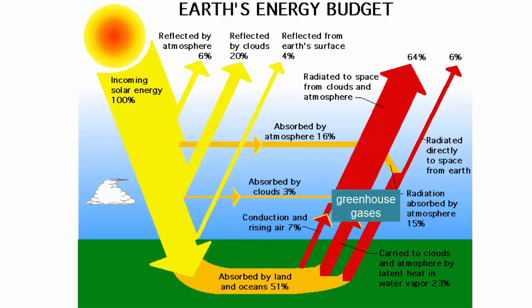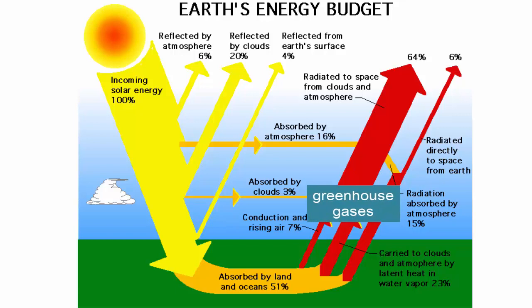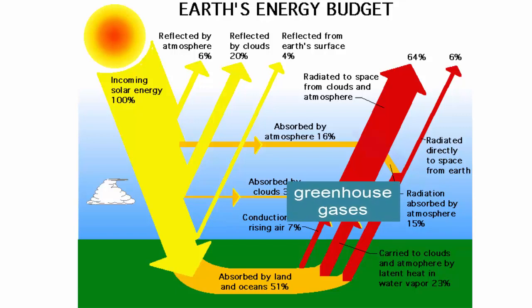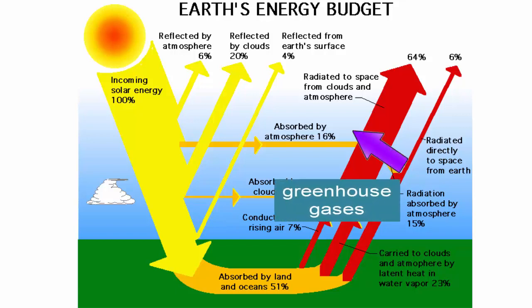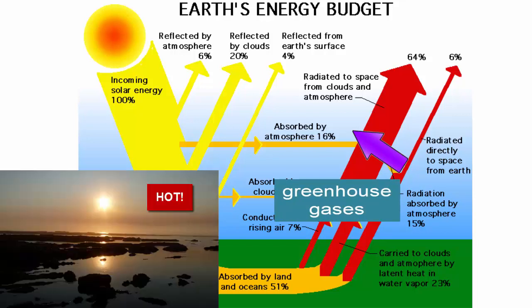As you are undoubtedly aware, the amount of greenhouse gases in our atmosphere is increasing. More greenhouse gases means more of the thermal IR heat is absorbed or trapped in the lower atmosphere, and a warming of Earth's surface.